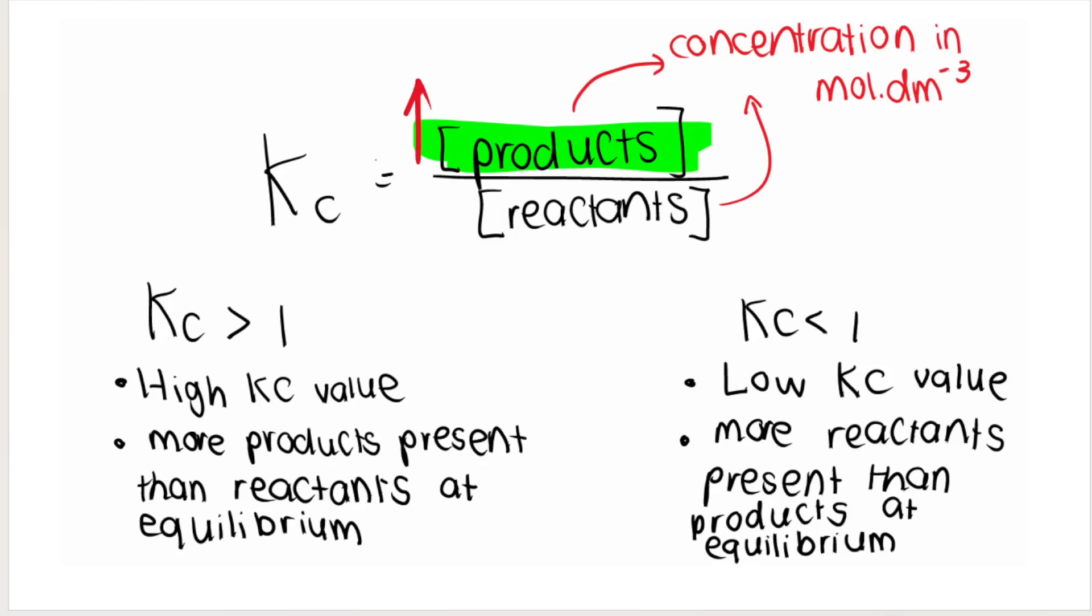In other words, my numerator is bigger than my denominator, my Kc value is going to be very big. It's going to be greater than 1. So think of something like 4 over 3. That gives me a Kc value that is bigger than 1.